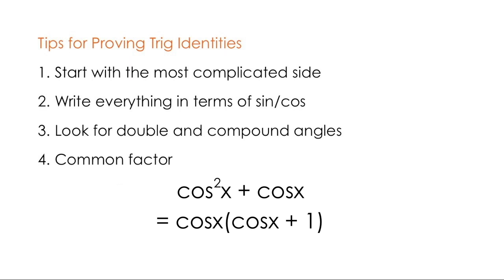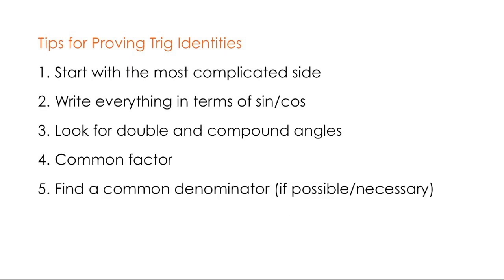Another thing people really struggle with is finding a common denominator. Remember, if you want to add or subtract fractions, you have to find a common denominator. Most people know how to add 1 over 2 plus 1 over 3, but when they're faced with 1 over sine plus 1 over cos, they shut down. Remember that this is the exact same skill and is necessary quite often in trig identity problems.